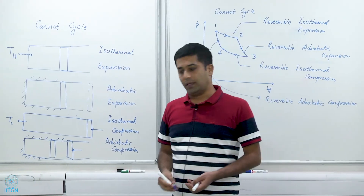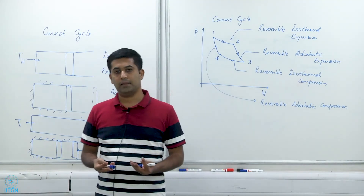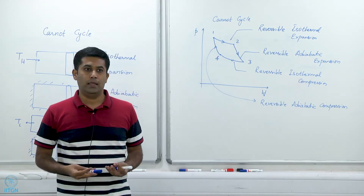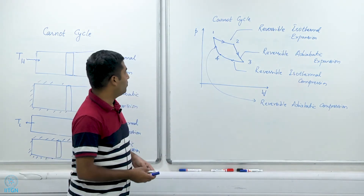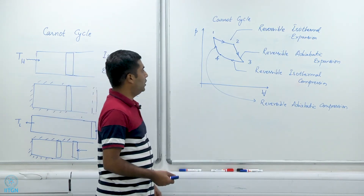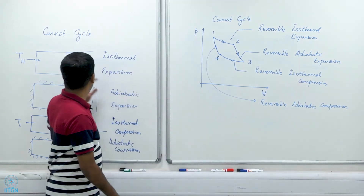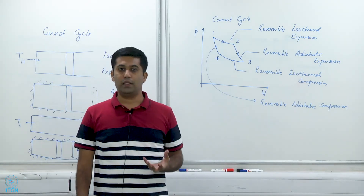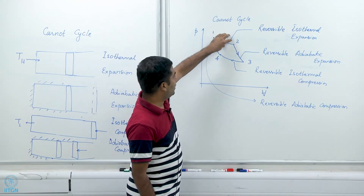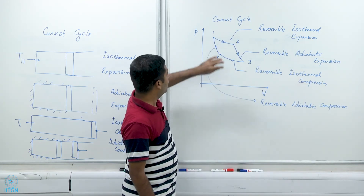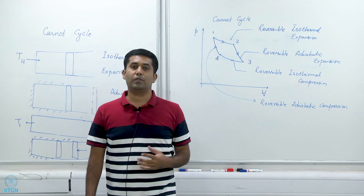The Carnot cycle is a theoretical cycle because it is very difficult to add heat to a gas without changing its temperature — you can do this with a phase change but not easily with a gas. It is also very difficult to have reversible compression and expansion because a piston will always have some friction with the cylinder. So it is an idealized process. All four processes — reversible isothermal expansion, adiabatic expansion, isothermal compression, and adiabatic compression — are reversible, making the Carnot cycle itself a reversible cycle.